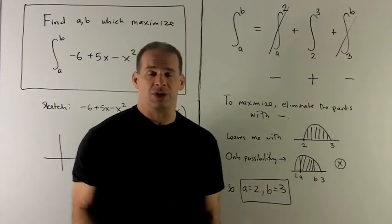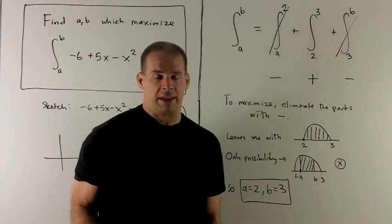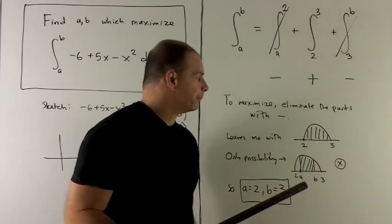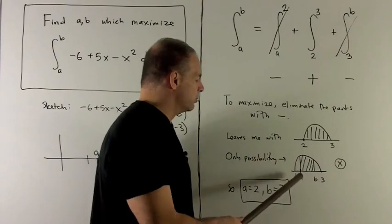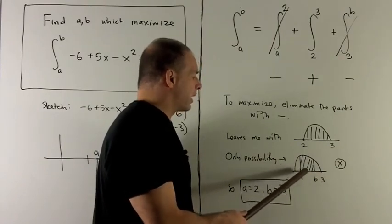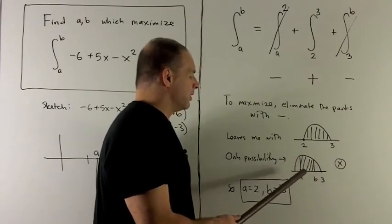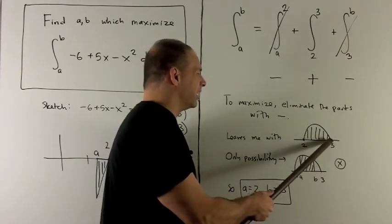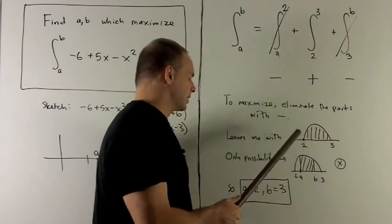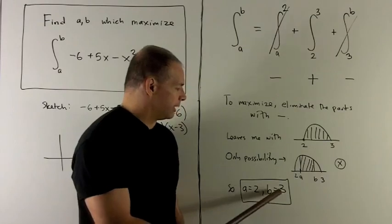Now, we might be worried, is there anything we can do to this that might make the definite integral bigger? Well, the only thing we can really do here is to move a and b to the inside, and you'll notice no matter how I do that, that's going to give me a smaller area. So that's going to mean the original region from 2 to 3 is already going to be maximized. So my answer is a equals 2 and b equals 3.